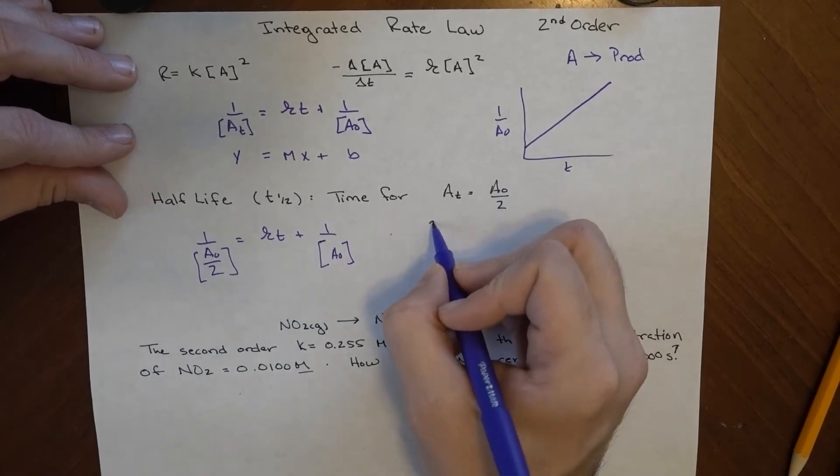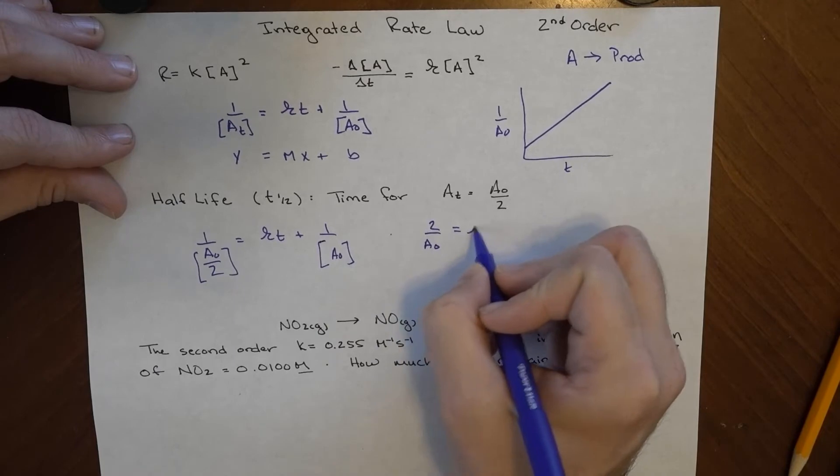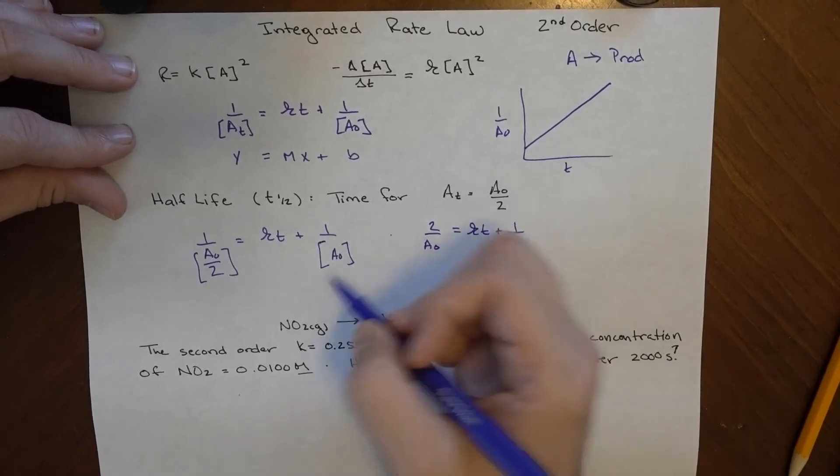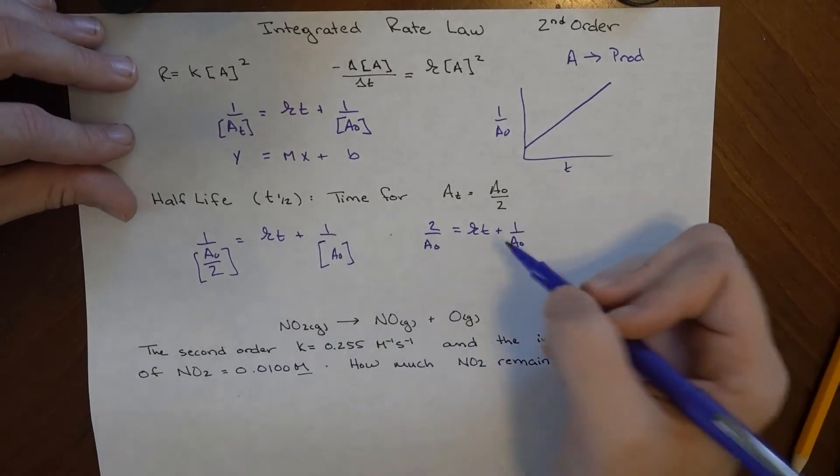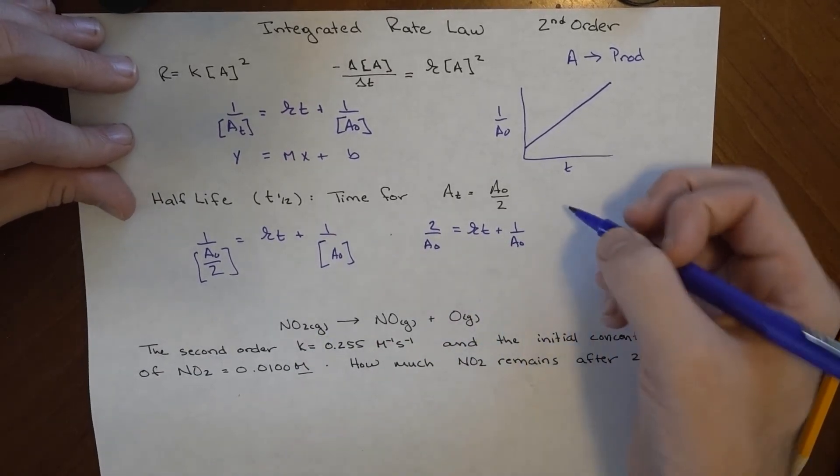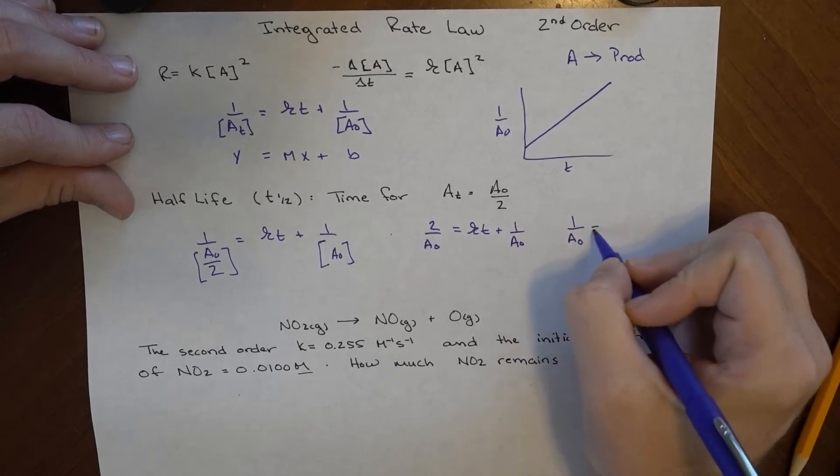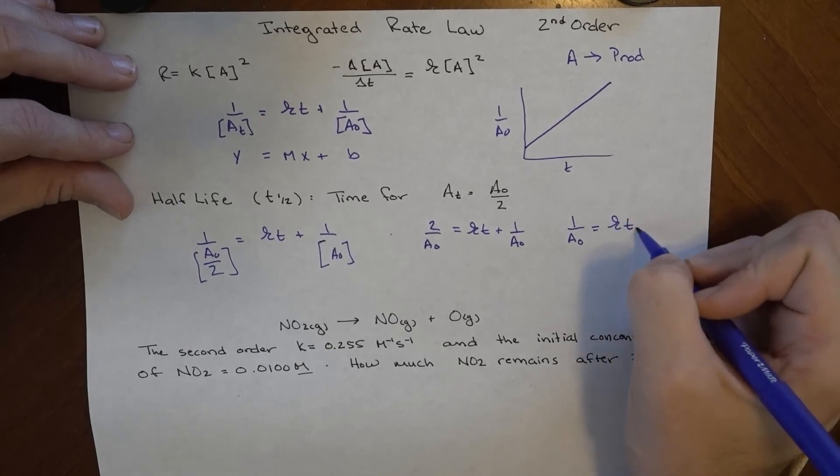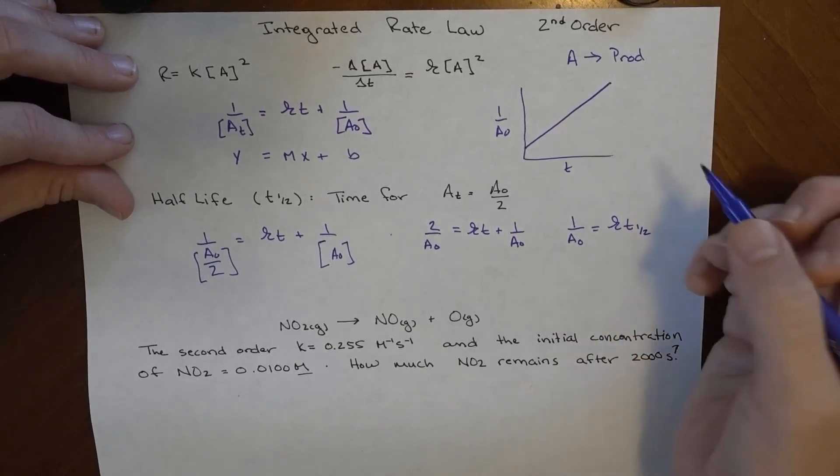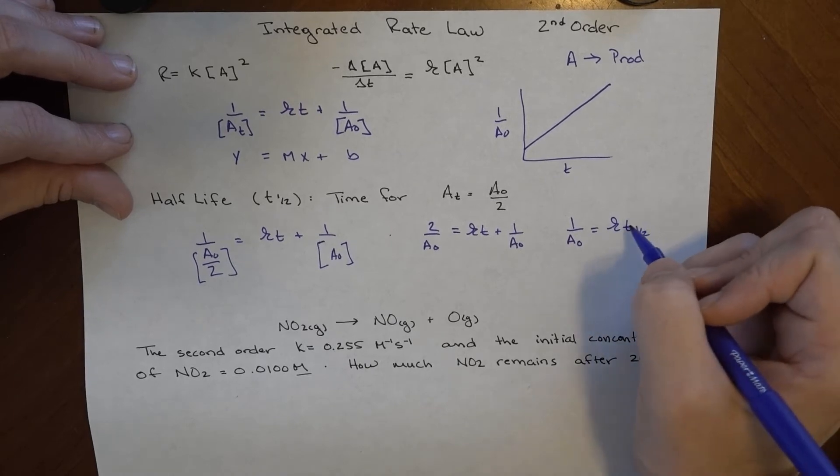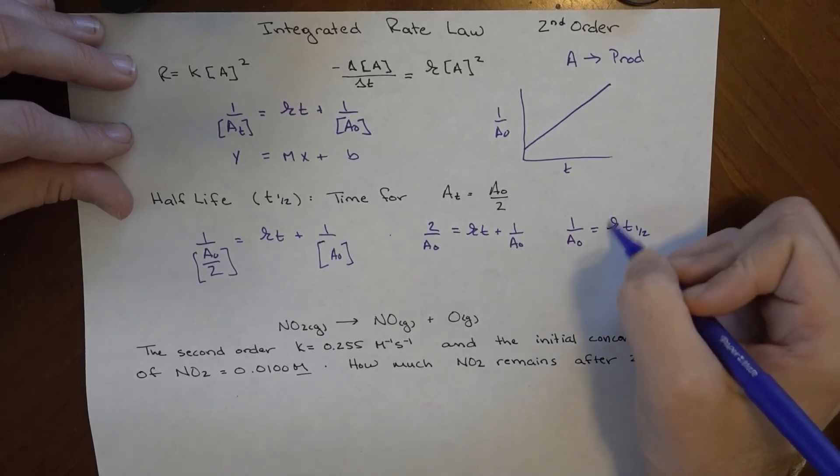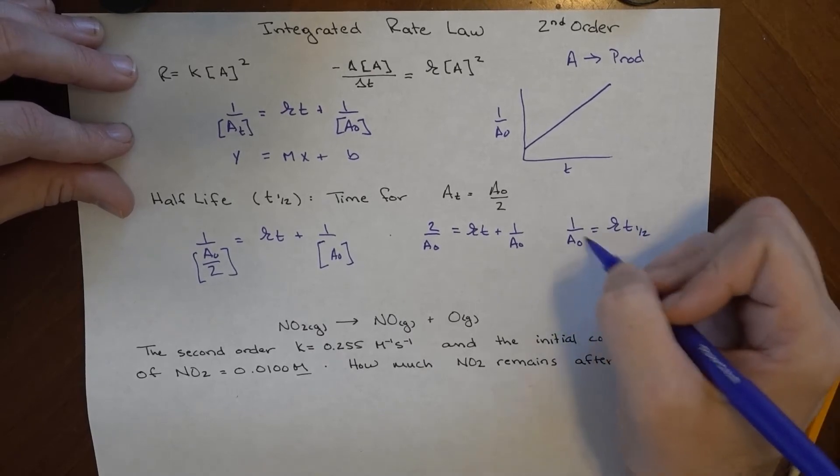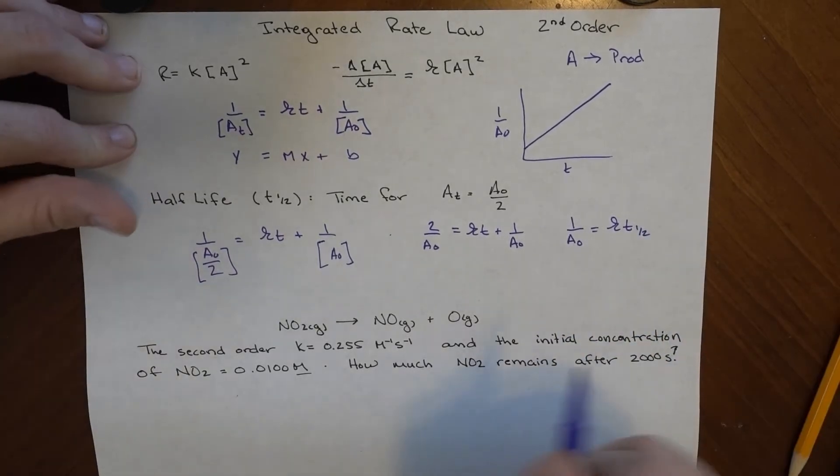Simplifying this, I'll drop the brackets for the moment just for less writing, and then I get to subtract 1/A₀ from both sides, so this ends up being 1/A₀ = kt at one-half. This means that this is the half-life, so I can figure out if I know the rate constant then I can figure out the half-life, and if I know the half-life I can figure out the rate constant as long as I know the initial concentration.